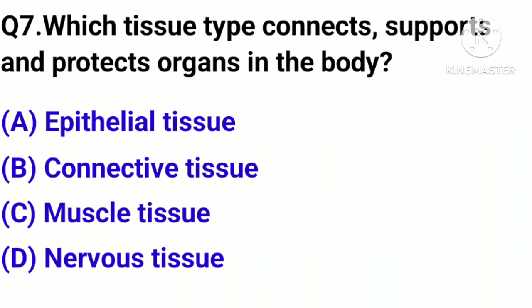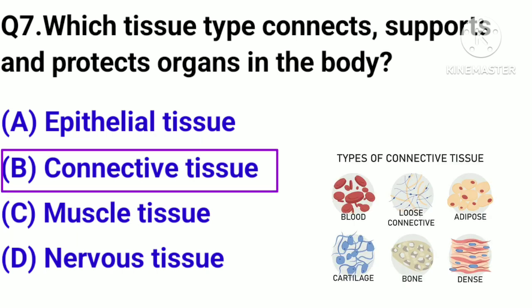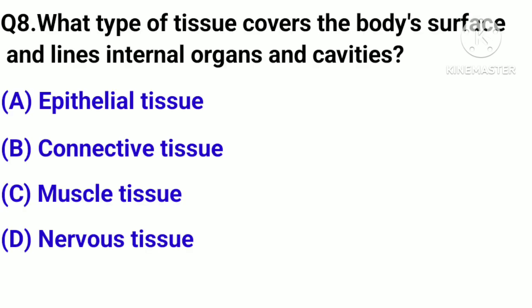Question number 7. Which tissue type connects, supports, and protects organs in the body? Option A: Epithelial tissue. B: Connective tissue. C: Muscle tissue. D: Nervous tissue. Correct answer: Option B, Connective tissue.